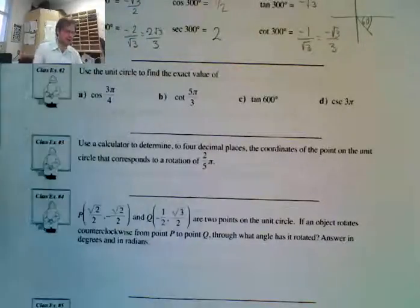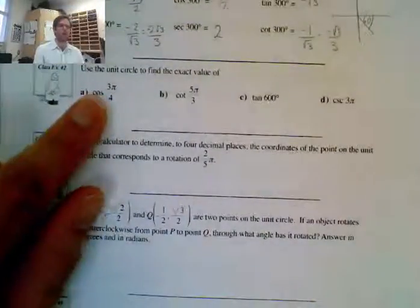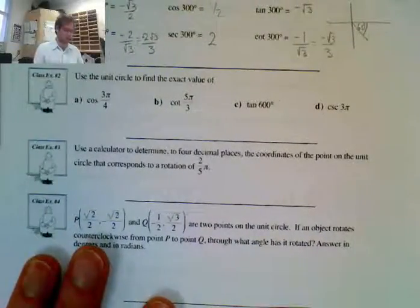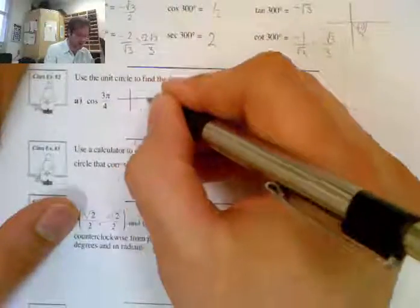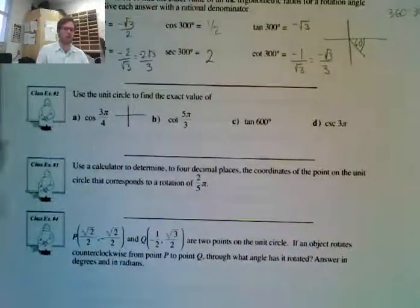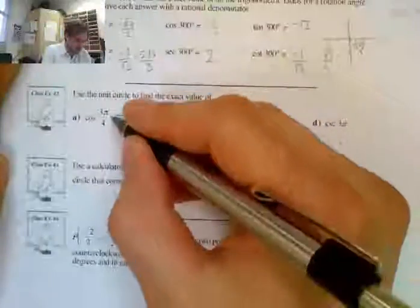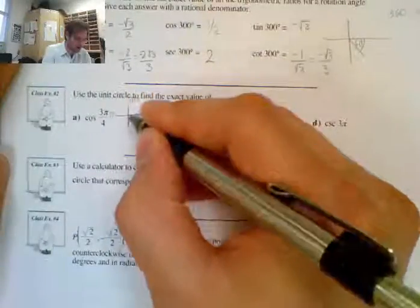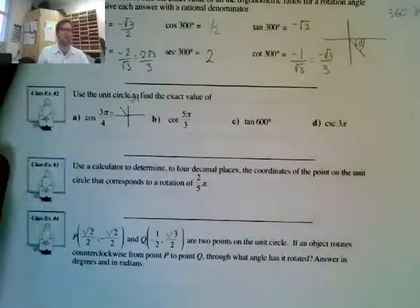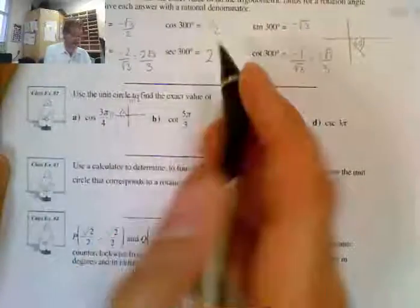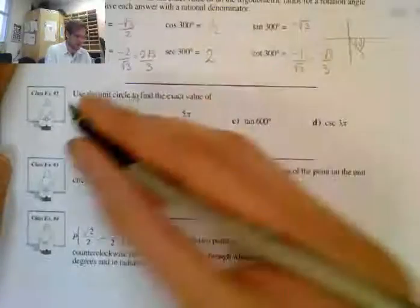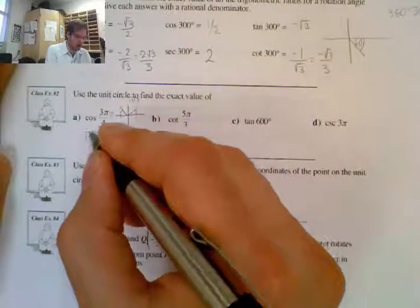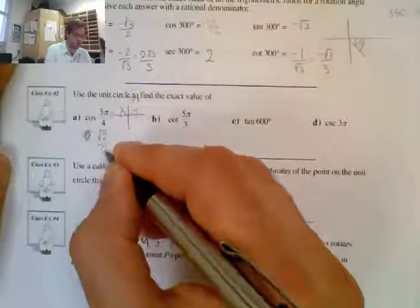Question 2 says: use the unit circle to find the exact values of the following. First, cosecant of 3π/4. Now 3π/4 is halfway between π/2 and π, so that's the 45° angle in quadrant 2. My reference angle is 45°, which gives √2 over 2. But cosecant refers to the reciprocal of sin, which is the y value — and it's negative in quadrant 2, so cosecant is −√2/2 reciprocal, giving −√2.